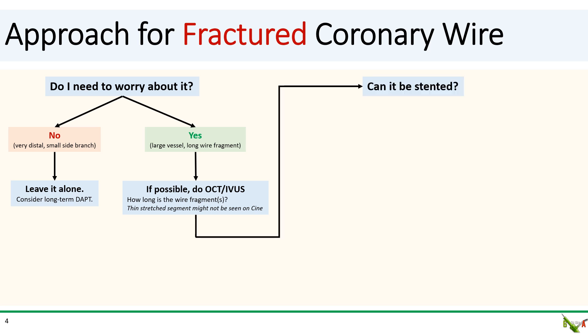Next, you want to ask yourself whether you can just stent over the wire fragment. Stenting over the wire fragment will pin the wire against the wall and prevent it from embolizing, and reduce the chance of thrombosis. Effectively, stenting turns the wire fragment into a strut of a bare metal stent. If you can stent over the wire fragment, then just stent it — this is a simple solution. After stenting, you might want to consider long-term DAPT.